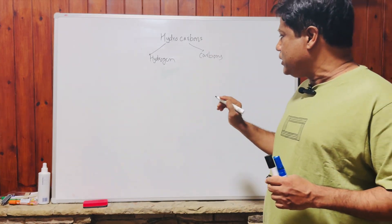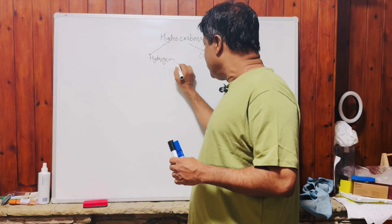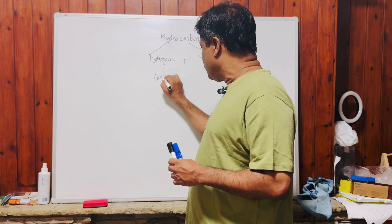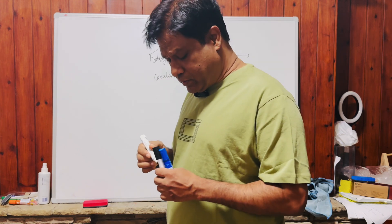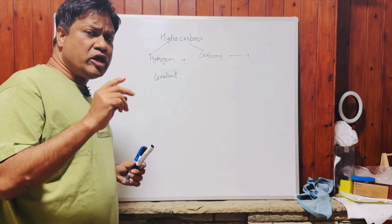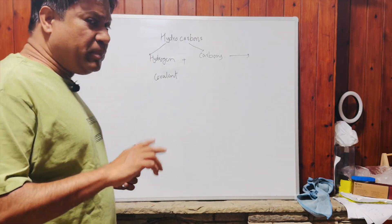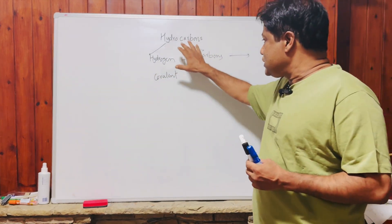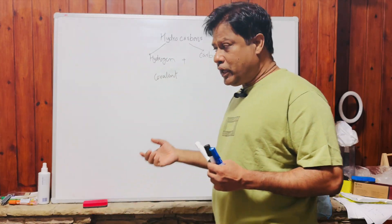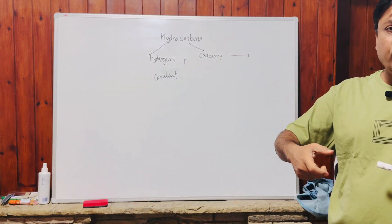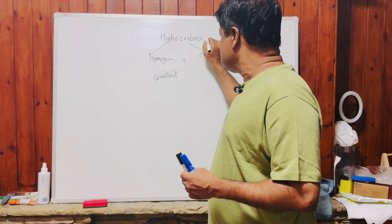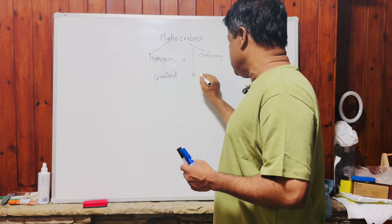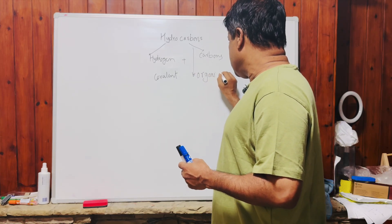Hydrogen and carbon join together by means of a covalent bond. A covalent bond is formed by sharing a pair of electrons between two non-metals. Hydrogen is a non-metal and carbon is a non-metal. Hydrocarbons are a major class of organic chemistry.